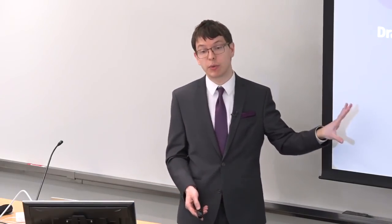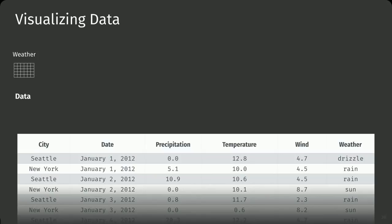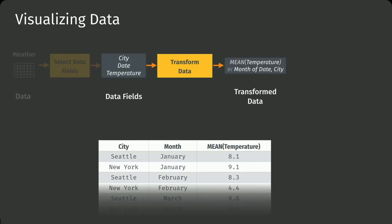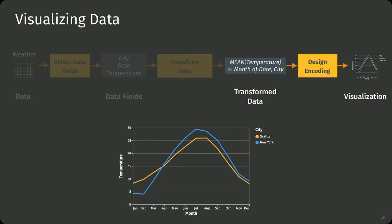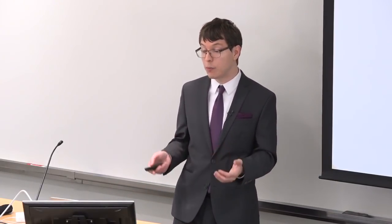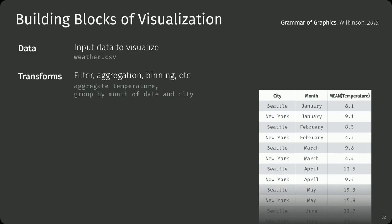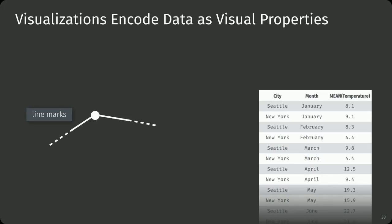To talk about representation, let's look at how we actually make visualizations. We usually start with a dataset like one about weather in Seattle and New York, pick some fields like city, date, and temperature, apply transformations to bin, aggregate, filter, and so on, and finally create the chart. We want a representation of this process with few constructs. To capture this using a small number of composable building blocks, we build on the Grammar of Graphics — specifying data and transformations, then the visual encoding itself. The way we express visualizations is as a mapping from data to visual properties of a mark, such as a line mark.